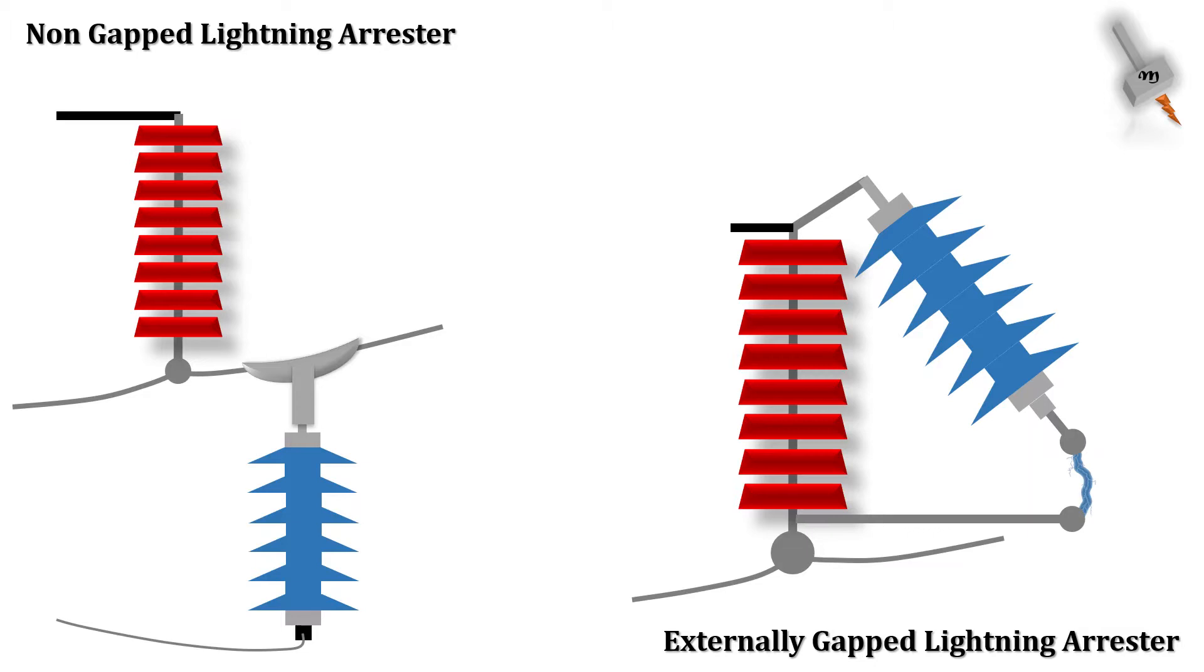Let's first get an understanding how the two designs appear. The left side image is of a Non-Gapped Lightning Arrester, otherwise known as NGLA. And the right side image is of an Externally Gapped Lightning Arrester or EGLA.